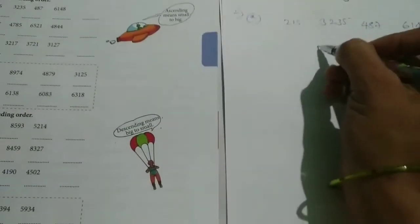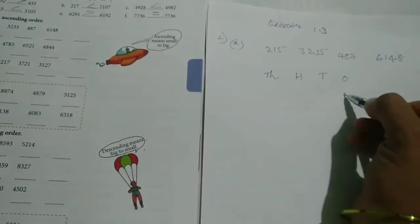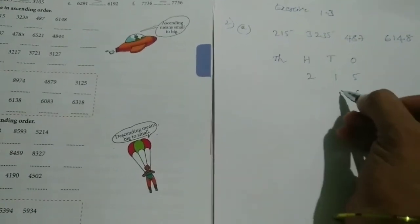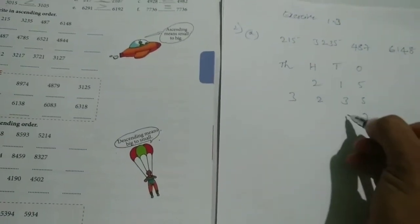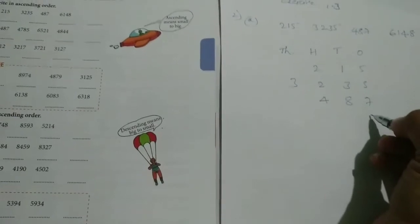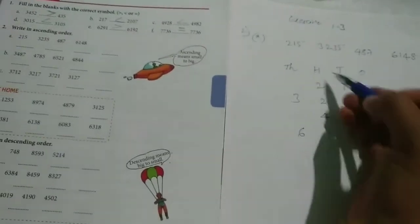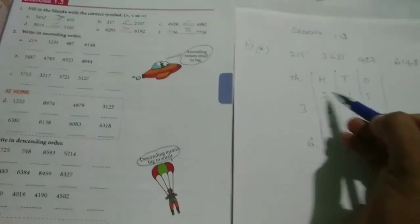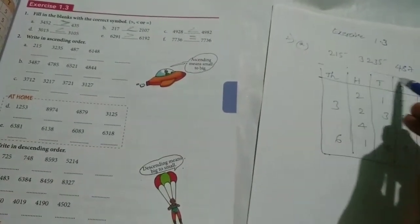See here. Ones, tens, hundreds, thousands. For first one: ones is 5, tens is 1, hundreds is 2. Next number: 5, 3, 2, 3. Next: 7, 8, 4. Next is: 8, 4, 1, 6. For ascending, you have to put the columns properly.